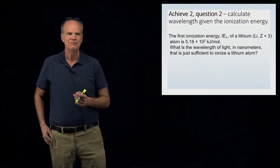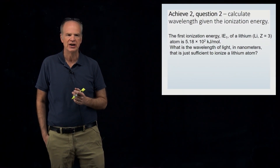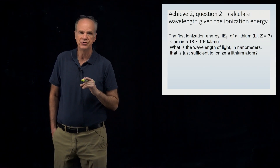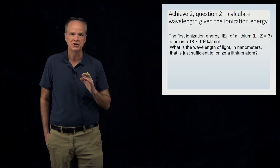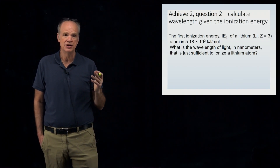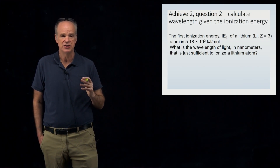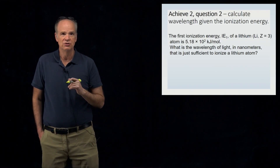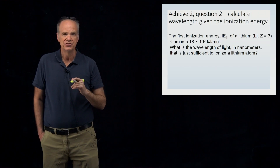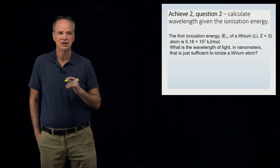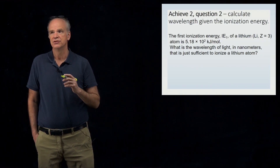This problem is a little bit on the difficult side. First, let me talk about what ionization energy is. In this particular problem we're dealing with lithium atoms. You might be given a different atom with a different ionization energy, but here we're working with lithium atoms. Lithium's symbol is Li, its atomic number is three, and the neutral atom has three electrons.